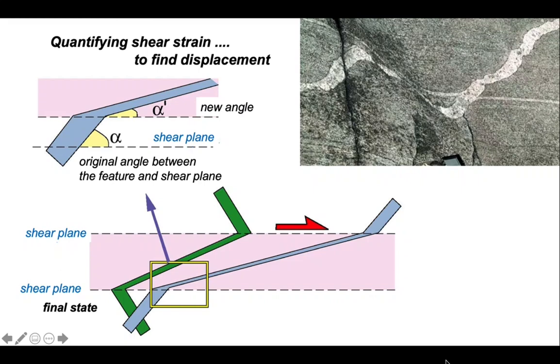Now, this pre-existing marker makes an orientation relative to the shear plane outside the shear zone of alpha. And as it goes into the shear zone, this blue marker deflects over, making a new angle, alpha prime.